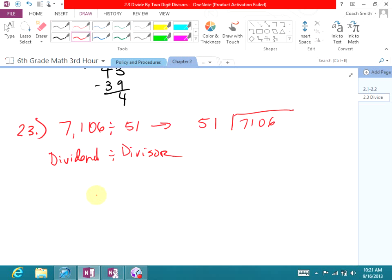All right, who has an answer for me? Keep working if you don't. It's 139 remainder 17. So we look at 51 into 71 goes one time. Be 51, remainder 20. Bring down my zero. 51 goes into 200 three times. It's 153, remainder 47. Bring down my six.